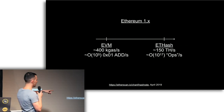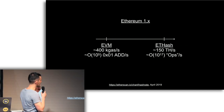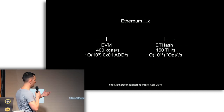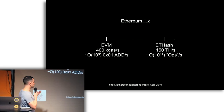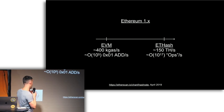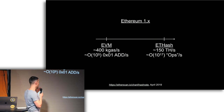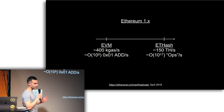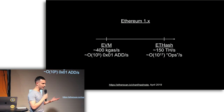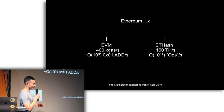The numbers are a little bit outdated, but they haven't significantly changed. So in April last year, I checked EtherScan, and roughly we do about 100,000 one-gas operations — so additions per second — on Ethereum right now. I'm comparing apples with oranges, so all the critical spirits can be very critical later.